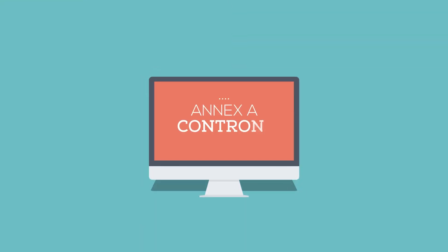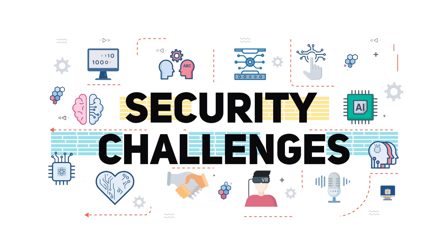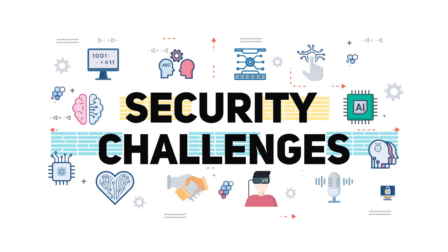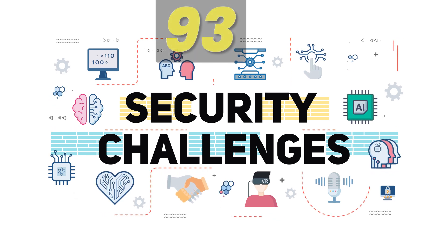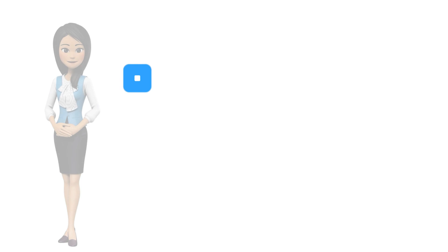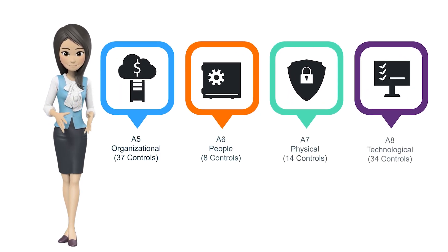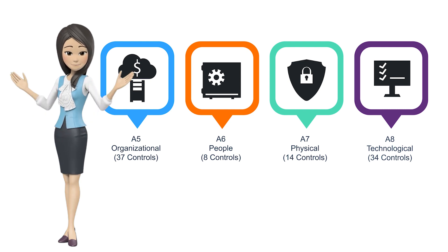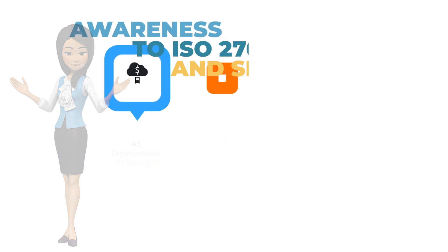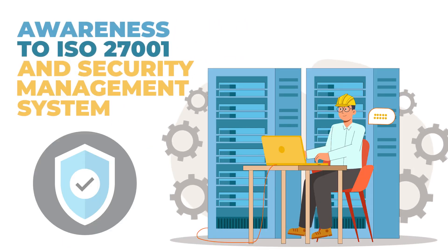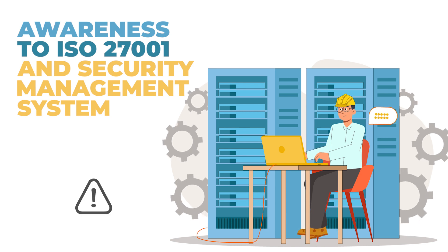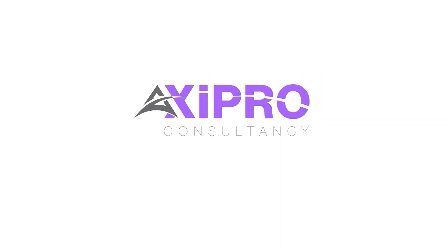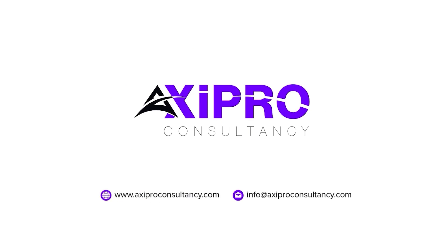The ISO 27001:2022 Annex A controls have been restructured and updated to reflect current security challenges, with 93 controls. These include: A.5 Organizational — 37 controls; A.6 People — 8 controls; A.7 Physical — 14 controls; A.8 Technological — 34 controls. Awareness of ISO 27001 and the security management system is critical to having a strong defense. For more information, please contact info@axaproconsultancy.com.